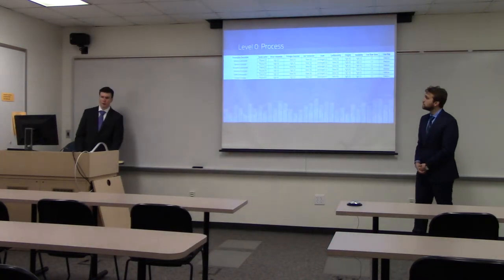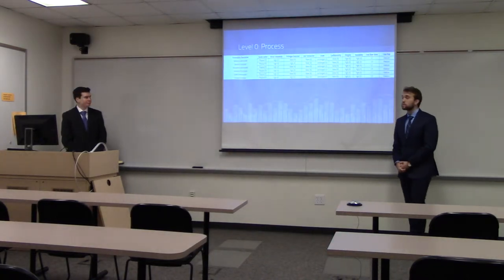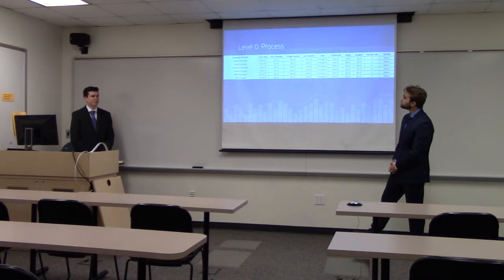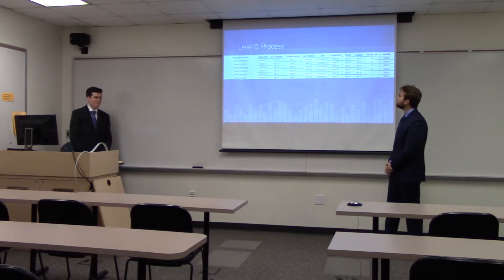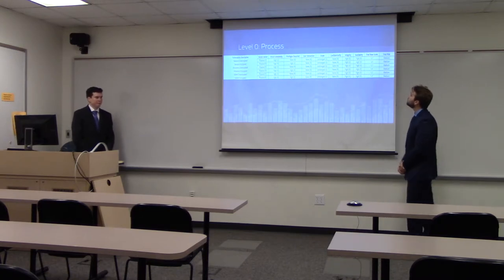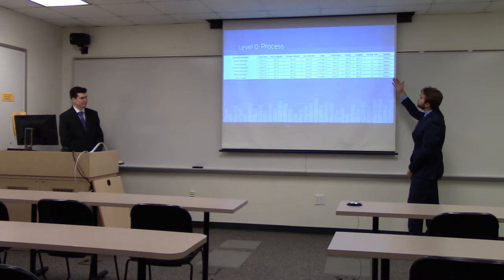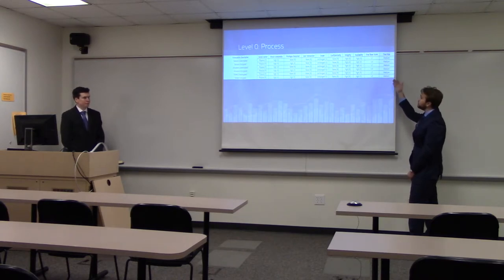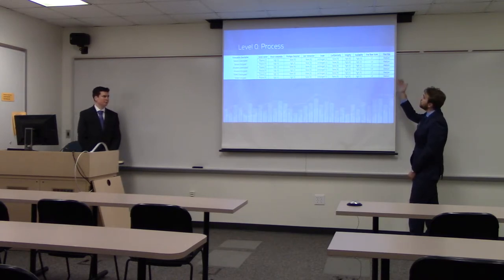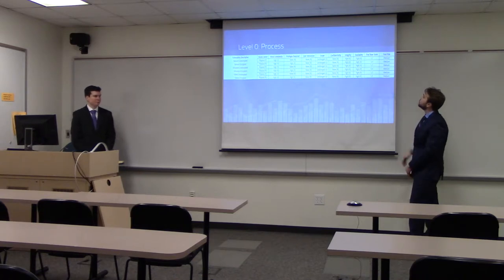This is level zero, or the process level, of our Excel spreadsheet. The final base scores for the unencrypted versions of these data streams are 5.7, and the encrypted versions are 5.4, both resulting in a final risk rating of medium.